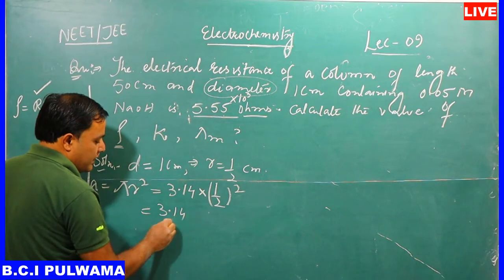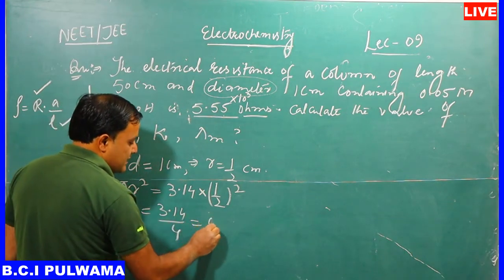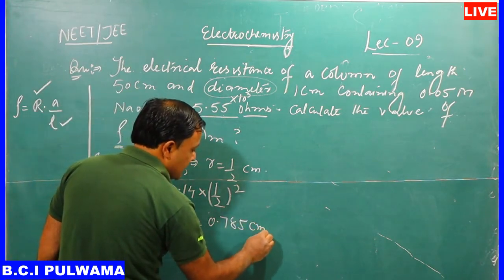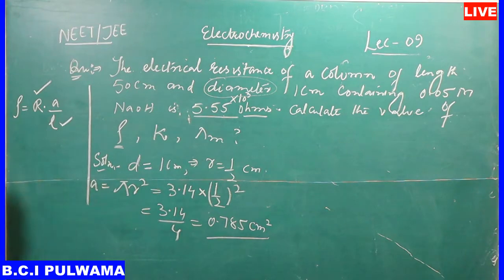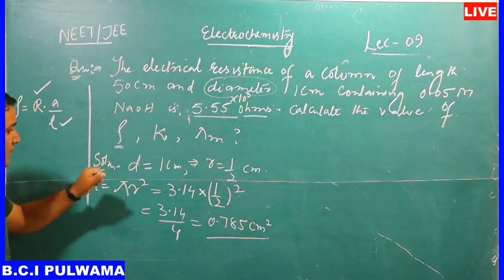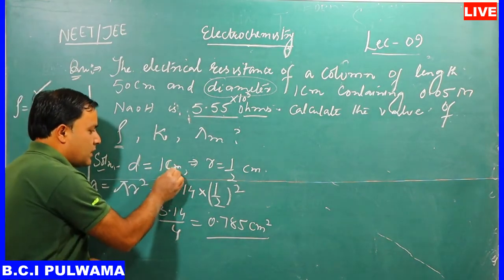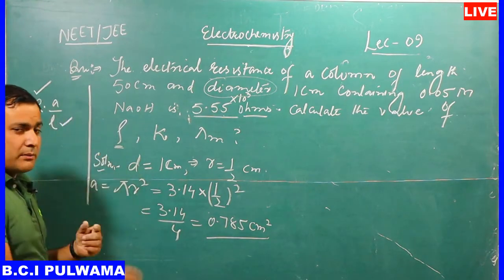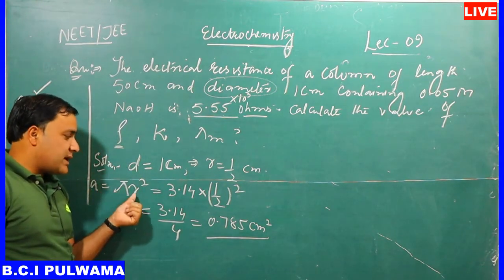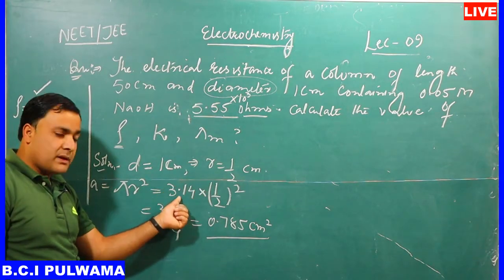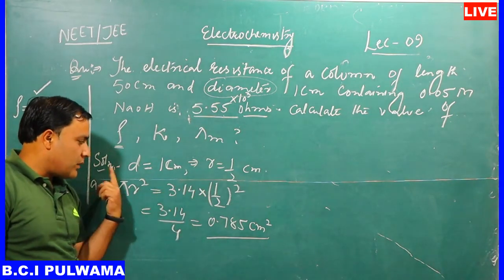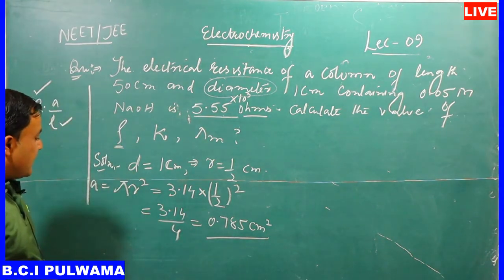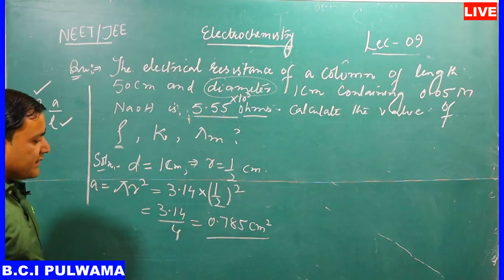Since diameter = 1 cm, radius = 1/2 cm. The area of cross-section A = πr² = 3.14 × (1/2)² = 3.14/4 = 0.785 cm².